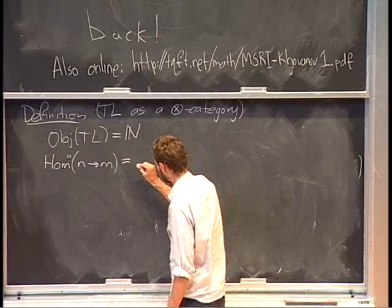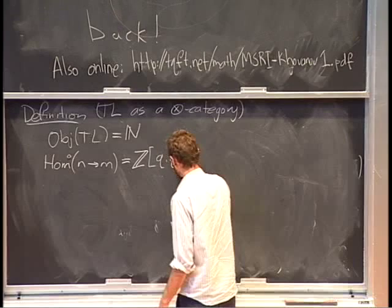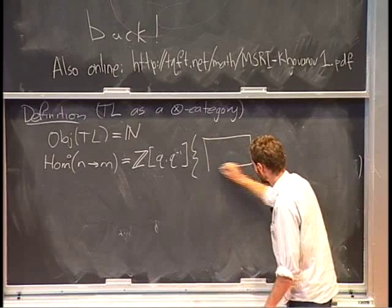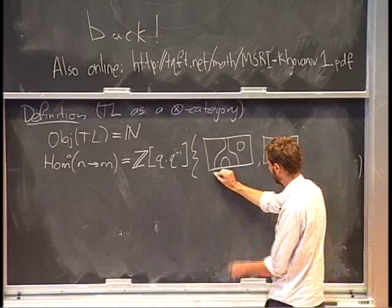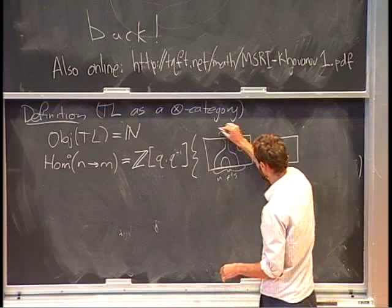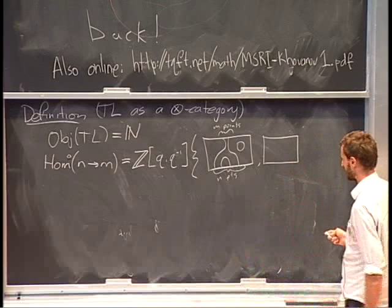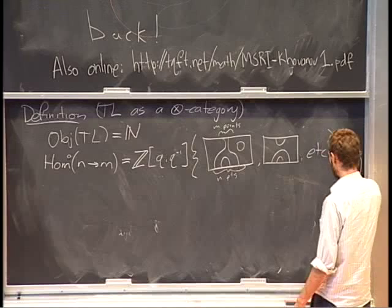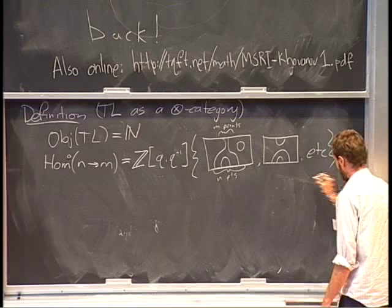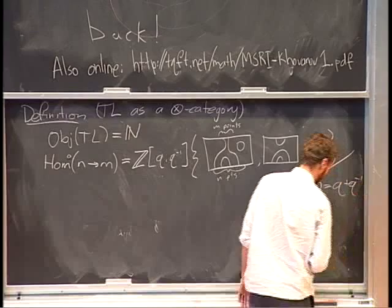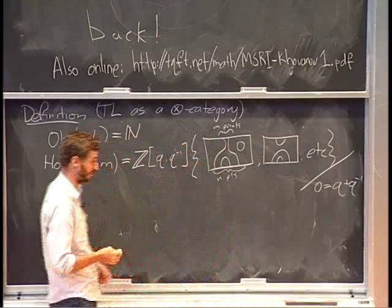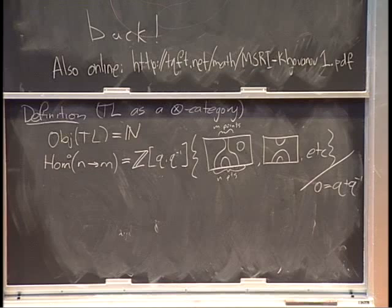The hom space is Z[q, q-inverse] linear combinations of pictures with N points at the bottom and M points at the top — I'm always reading from bottom to top — modulo a relation: any time you see a circle in a diagram, you can take that circle out and replace it by q plus q-inverse. So this diagram is equal to a sum of two other diagrams with some coefficients.